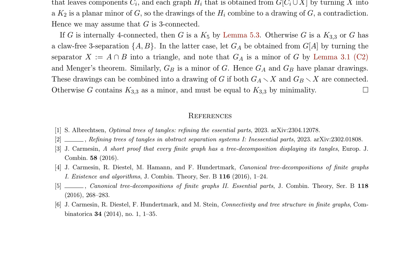This lemma is then used to provide an automatic proof of Kuratowski's theorem, which states that a graph is planar if and only if it does not contain K5 or K3,3 as a minor. The authors demonstrate that if G is an excluded minor for planarity, it must be two-connected and three-connected. If G is internally four-connected, then it is K5 by Lemma 5.3. Otherwise, G is K3,3 or has a claw-free three-separation, which can be combined into a planar drawing of G unless G contains K3,3 as a minor, in which case G must equal K3,3 by minimality.